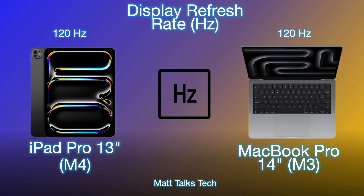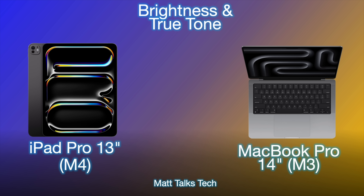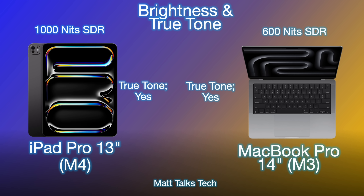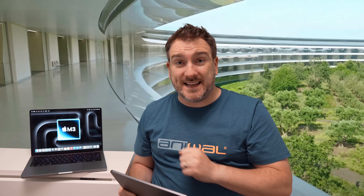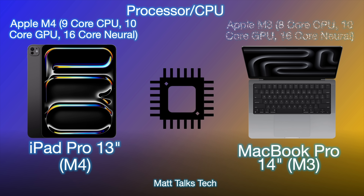For brightness and True Tone, the OLED display on the iPad Pro delivers 1000 nits SDR — normally we only get 500 or 600 nits, as seen on the MacBook Pro 14-inch. Apple also claims far better, brighter colors with HDR on the iPad Pro, meaning you'll see the screen far more clearly outdoors. The MacBook Pro still has XDR with 1000 nits as well, so it's still very good.